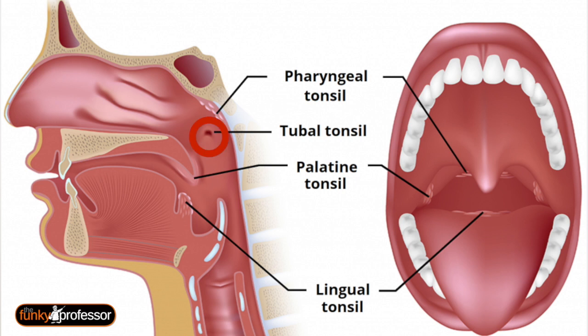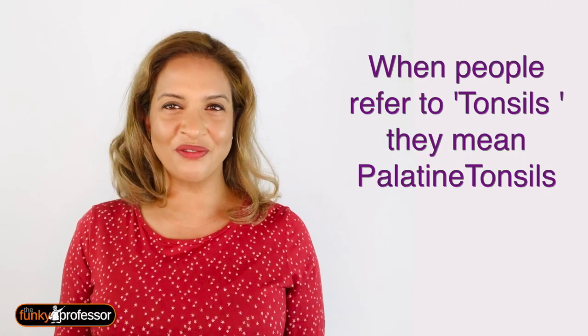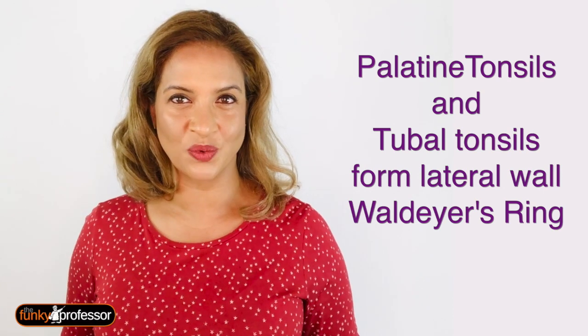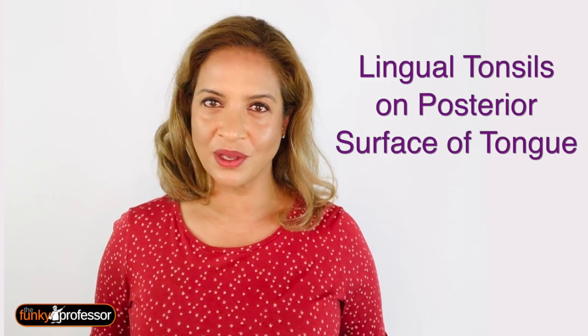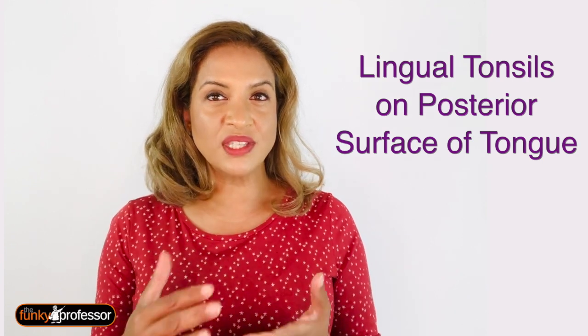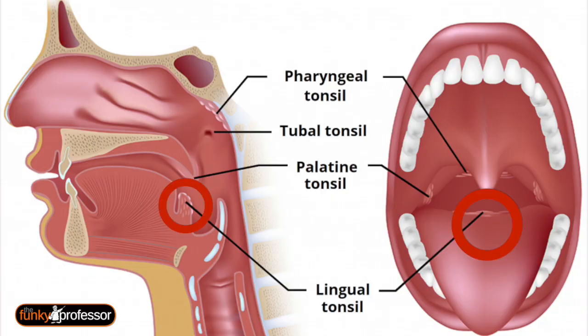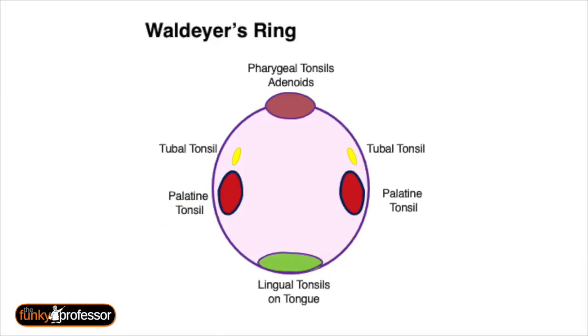The palatine tonsils are what we commonly refer to as 'the tonsils'; they are situated in the lateral oropharyngeal wall between the palatoglossal arch anteriorly and the palatopharyngeal arch posteriorly, and they also form the lateral part of Waldeyer's ring along with the tubal tonsils. The lingual tonsils are lymphoid nodules found in the submucosa of the posterior third of the tongue, giving the tongue its roughened appearance towards the back, and they form the inferior part of Waldeyer's ring. Heinrich Waldeyer-Hartz was a German anatomist who died in Berlin in 1921.